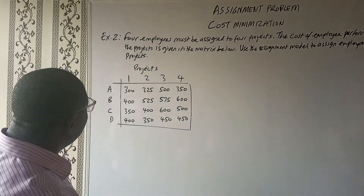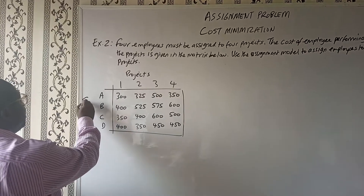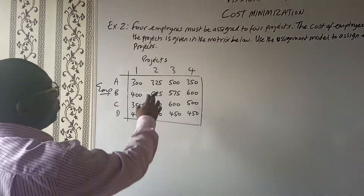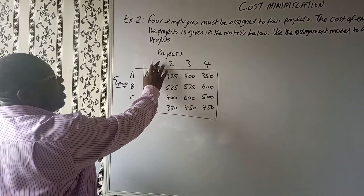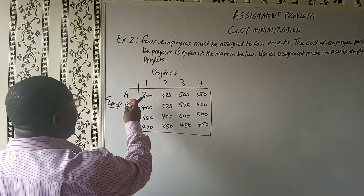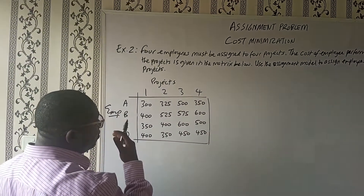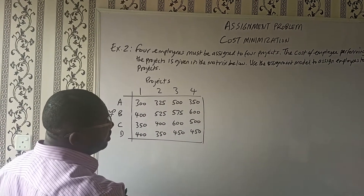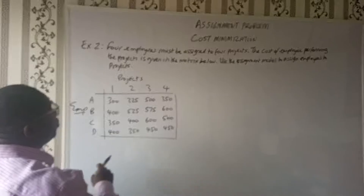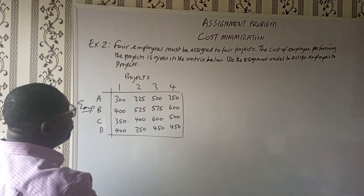We have four employees here — employees A, B, C, and D — on this side, and projects 1, 2, 3, and 4. The costs of assigning the employees to these projects are represented in this matrix.